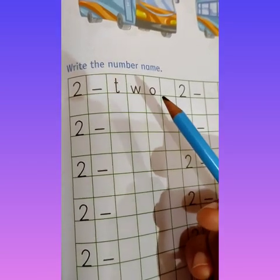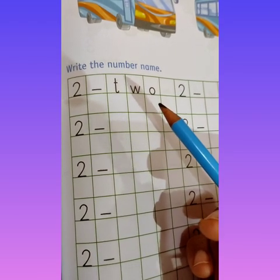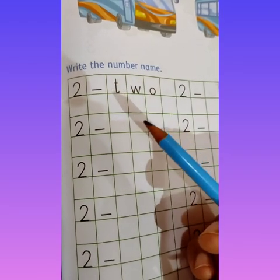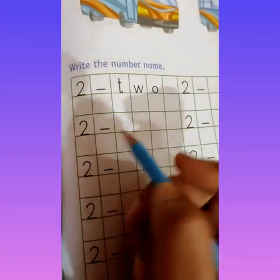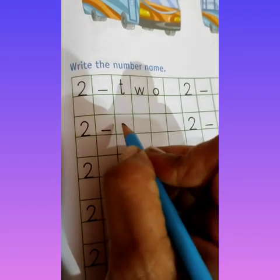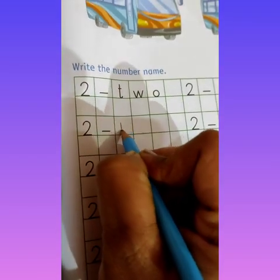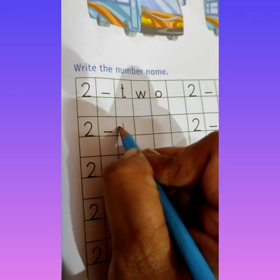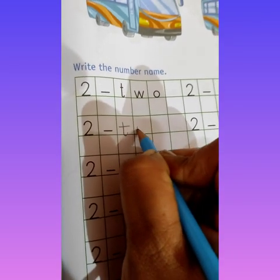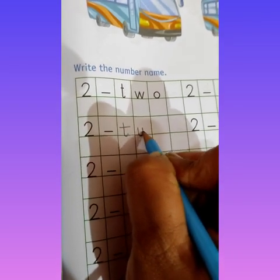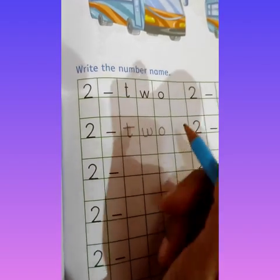2 — we will not do sound for this either. So we will repeat it and learn it. T, W, O — 2. T, W, O — 2.